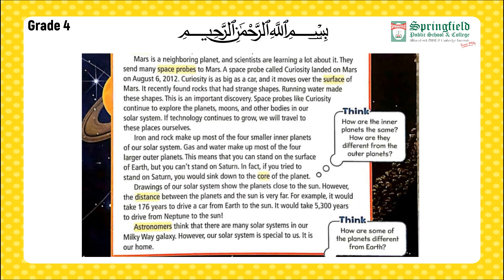For example, it would take 176 years to drive a car from Earth to the Sun. It would take 5,300 years to drive from Neptune to the Sun.